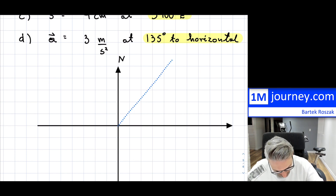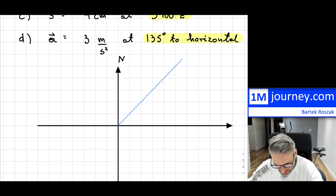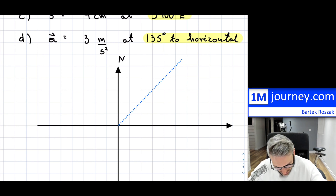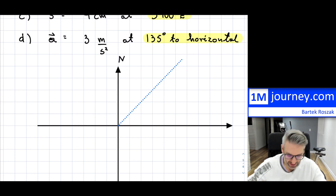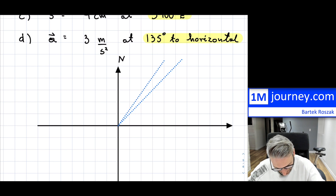So this is 45 degrees right here. We would have 45 degrees somewhere along in here. Now I need 30 degrees away from the north — so if that is 45, it's going to be 15 degrees less than that, so it is most likely somewhere along in here — that's about 30 degrees.